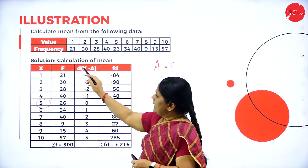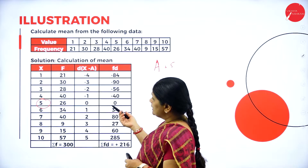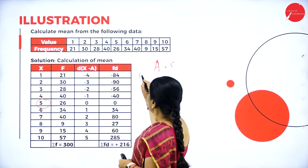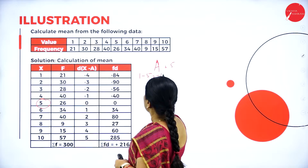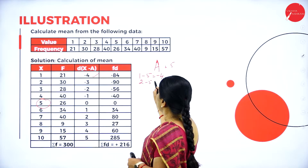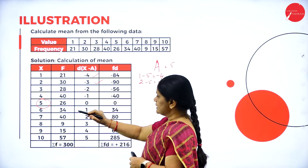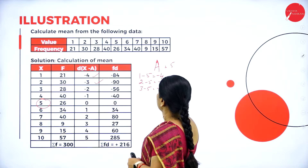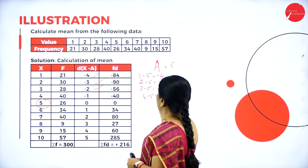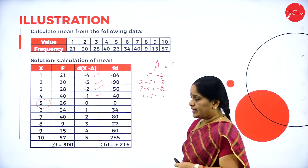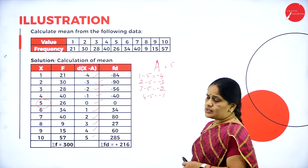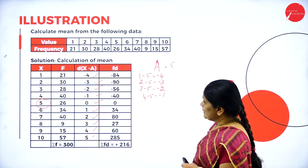We find the d values using x minus a. x = 1, so 1 − 5 = −4; 2 − 5 = −3; 3 − 5 = −2; 4 − 5 = −1; 5 − 5 = 0; and continuing 1, 2, 3, 4, 5. In this way we obtain the d values.